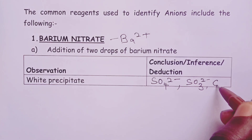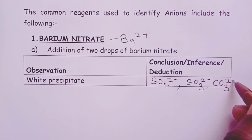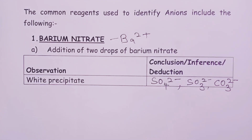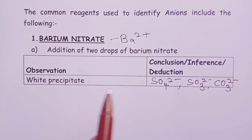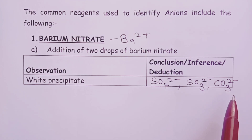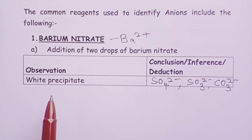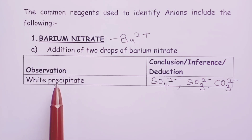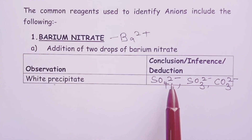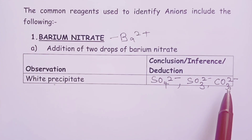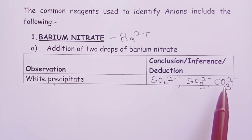Barium carbonate is another insoluble salt of barium, so white precipitate on addition of two drops of barium nitrate would also indicate that carbonate ions are probably present in your unknown solution. The opposite — no white precipitate formed — means a student is expected to conclude that these three anions, sulfate, sulfite, and carbonate, are absent.